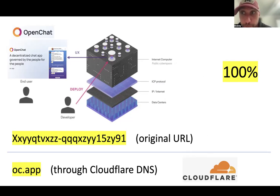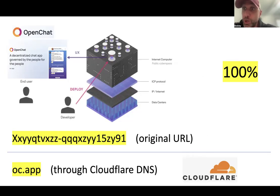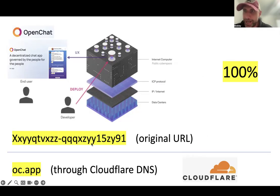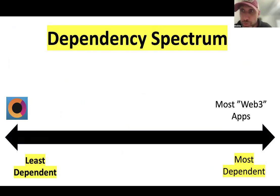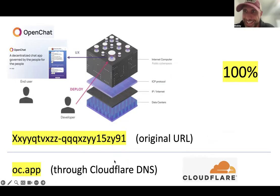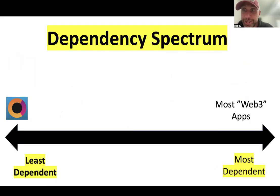OpenChat is a fully on-chain application. It's been running for years without firewalls and cybersecurity concerns. However, there are so many different variables you have to consider when delivering the best user experience possible while not making too many trade-offs that jeopardize the health, security, and stability of your application. So as opposed to only having the canister ID, they decided to use an outside third party for an easy-to-read domain name like oc.app. When Cloudflare goes down and you can still access OpenChat through the original canister ID, that highlights how resilient ICP-based applications are.